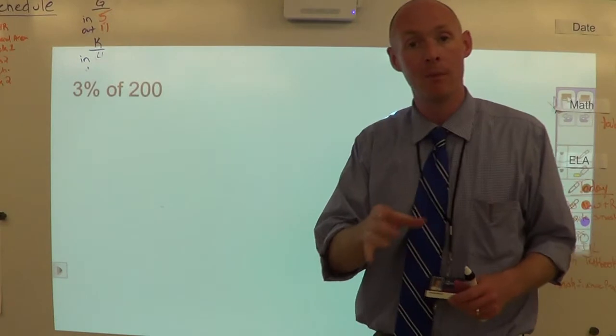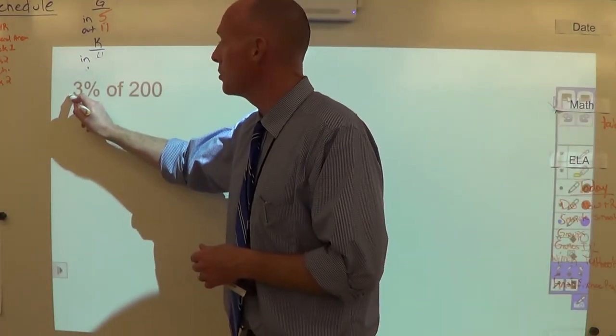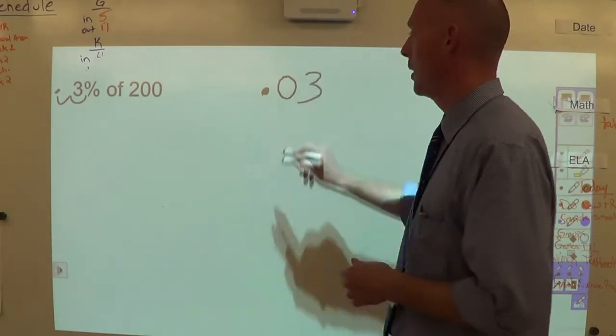Again, we've been working with it all week. Find your decimal spot here, move it once, move it twice, so we have decimal 0.03. All right.